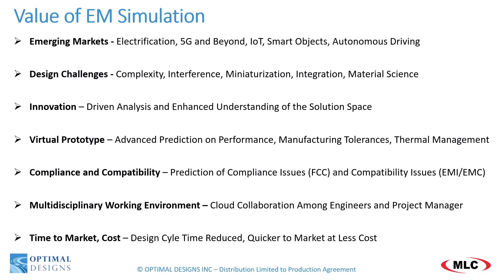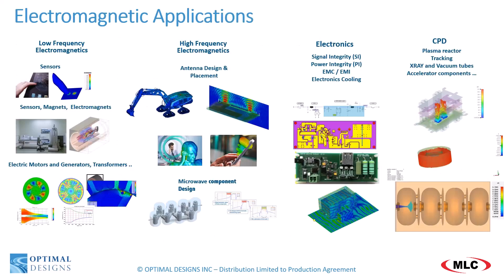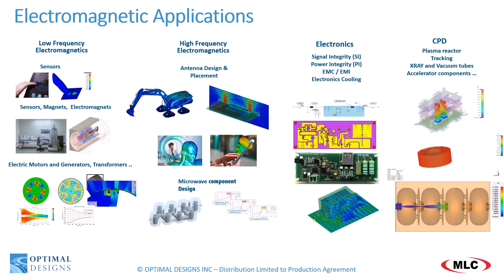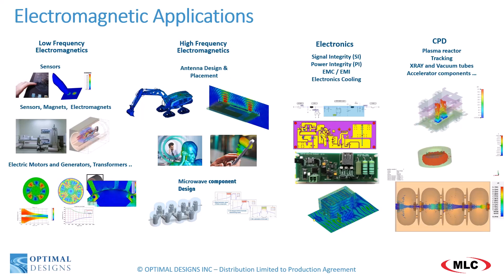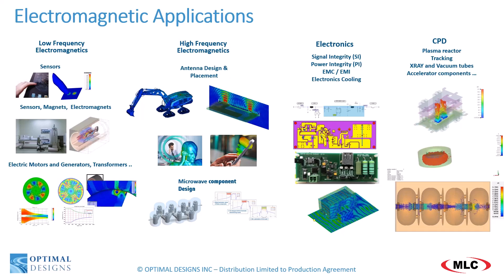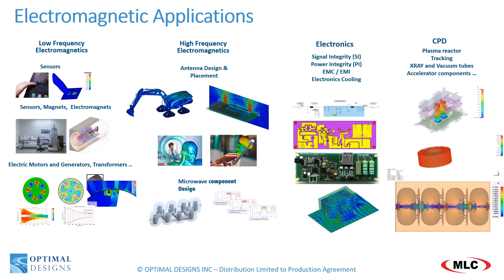Time to market and cost: design cycle time is reduced, getting products to market quicker at less cost. This is a snapshot of different EM applications moving from low frequency to high frequency. What defines low frequency from high frequency is the comparison between the size of the device to the wavelength of operation. Low frequency devices are a fraction of a wavelength, where high frequency devices are multiple wavelengths.